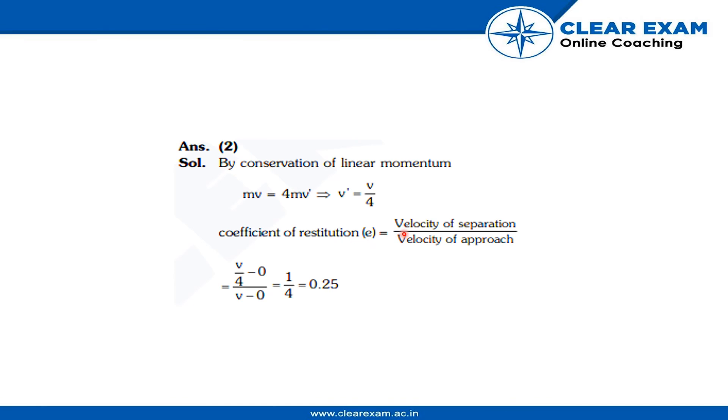which is equal to velocity of separation divided by velocity of approach, which is v by 4 minus 0 divided by v minus 0, equals 1 by 4, which is equal to 0.25.